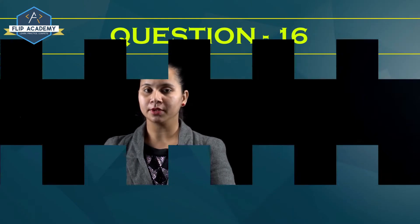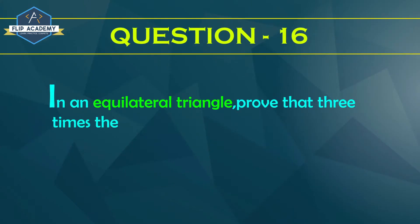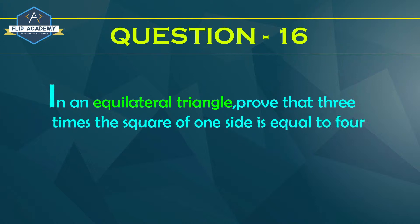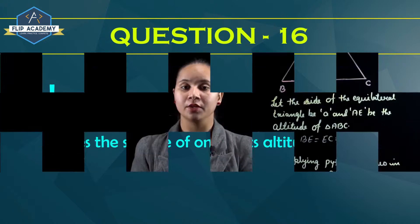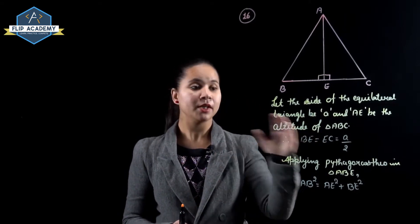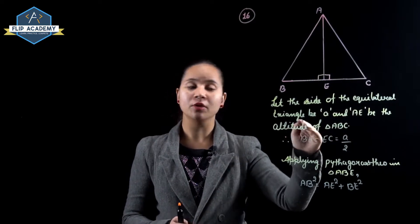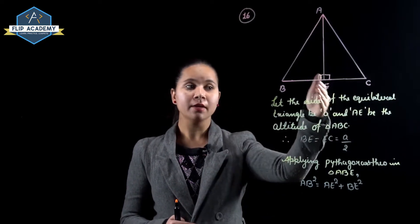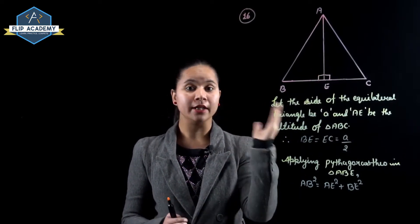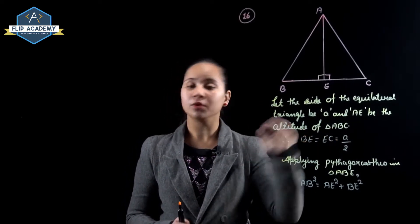Triangle exercise 6.5, question number 16. In an equilateral triangle, prove that 3 times the square of one side is equal to 4 times the square of one of its altitudes. ABC is an equilateral triangle with all sides equal to A, and AE is the altitude of triangle ABC, making a 90-degree angle. BE is equal to EC is equal to A/2.